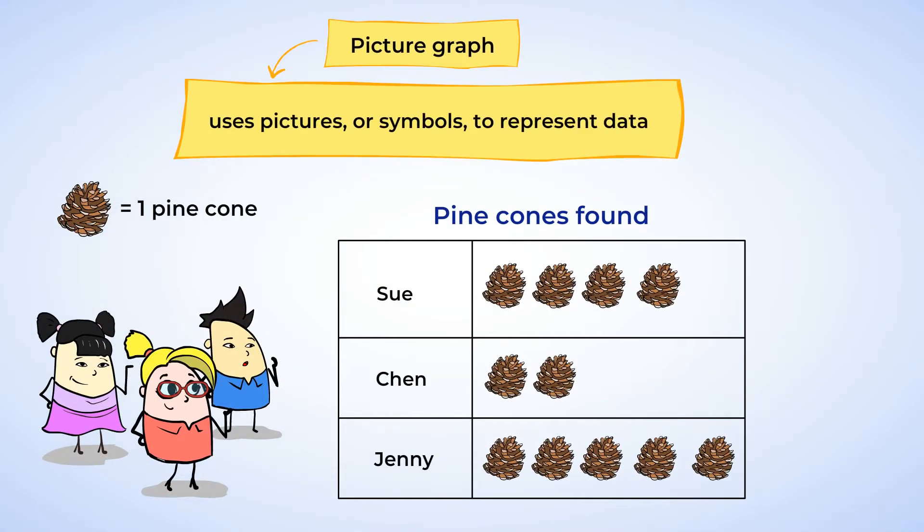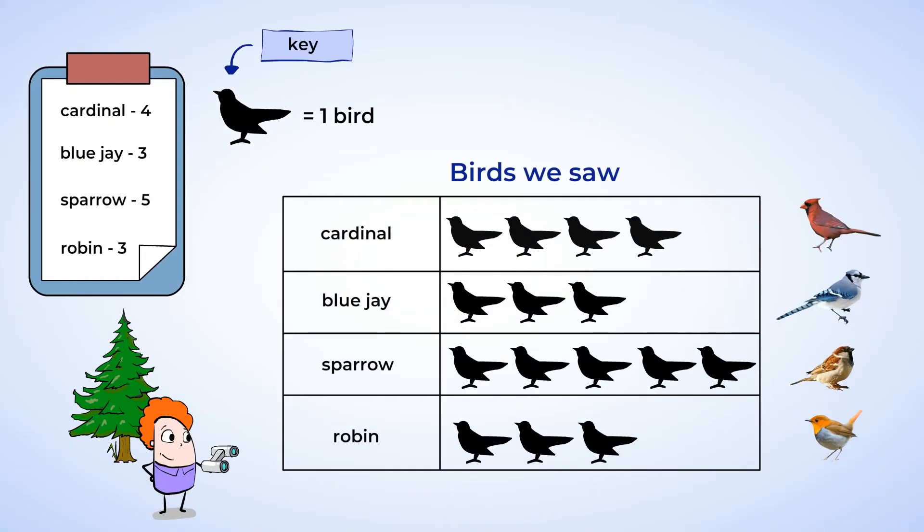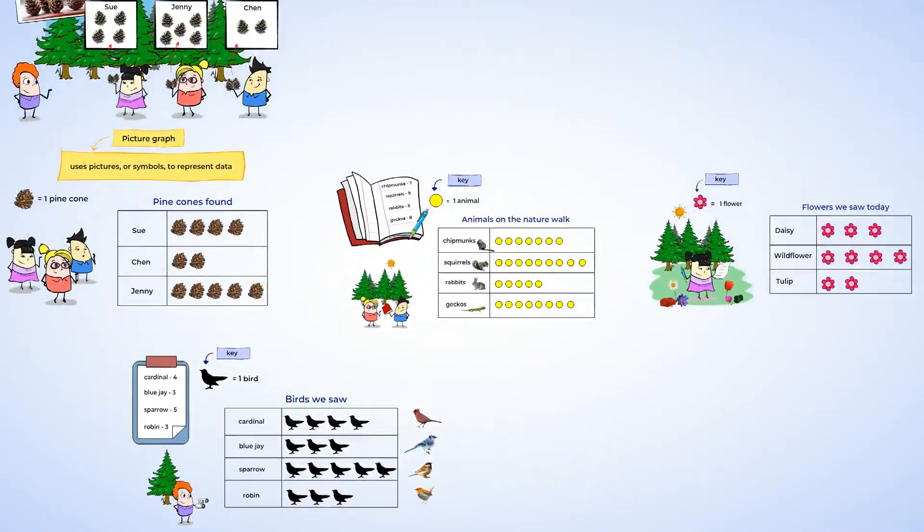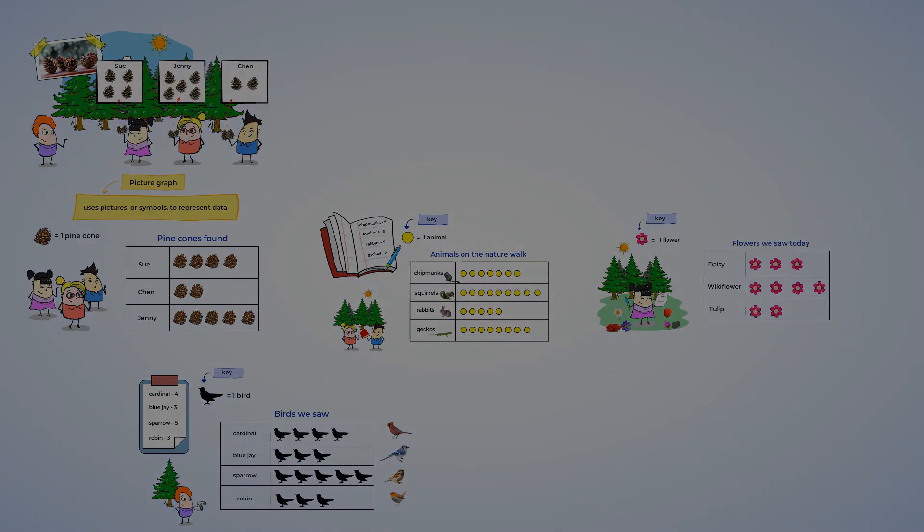Today, you learned to make picture graphs. You learned that picture graphs help organize data by using a picture or a symbol to represent the data. Every picture graph should have a title to tell you what the picture graph is about and a key to tell you what the picture represents. Stay tuned for more Mighty Graphs.